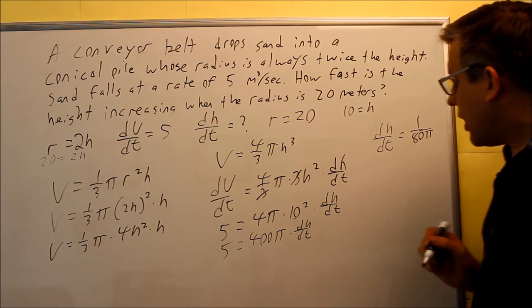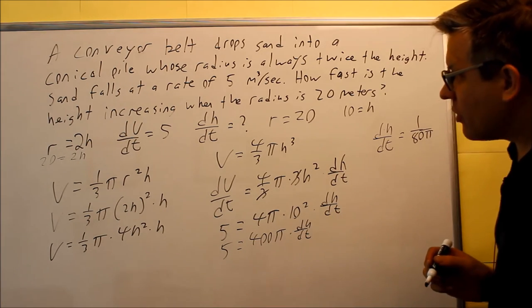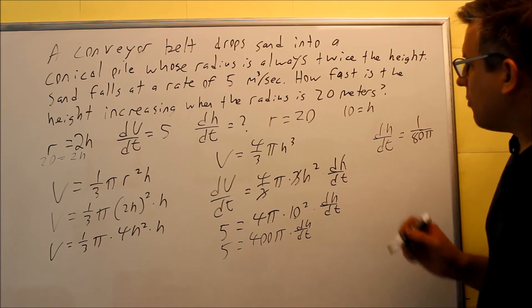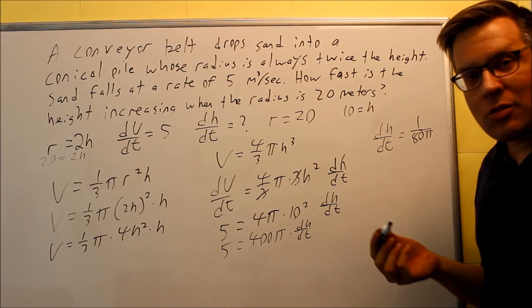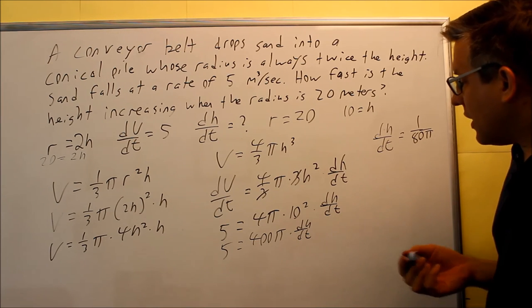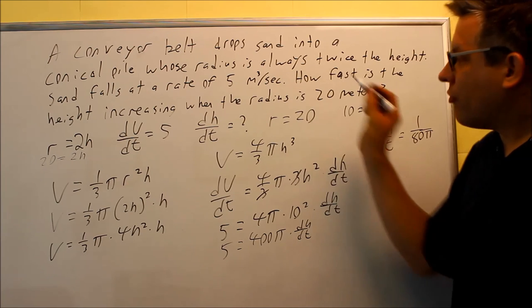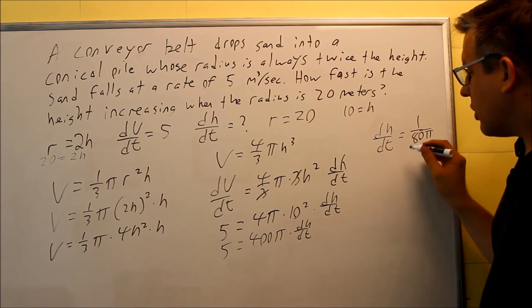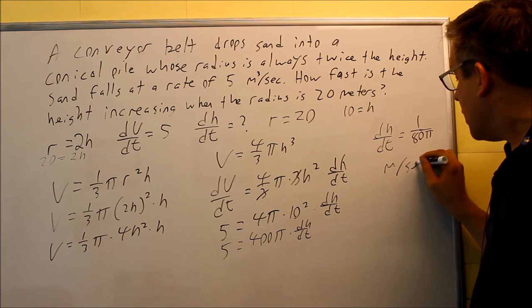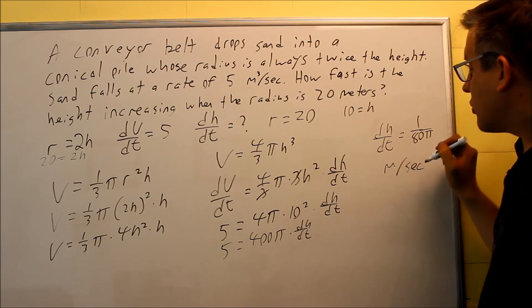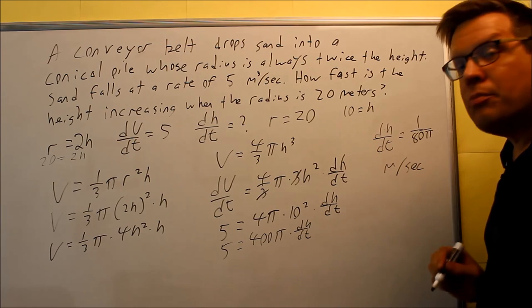And so you get 1 over 80 pi. Now what kind of units are we going to have on this one? Well, these dimensions, the radius is in terms of meters. That means your height's going to be in terms of meters as well. The time is going to be the same unit of time that we had before, seconds. So the units that we'll have on this are going to be in terms of meters per second. So the answer is 1 over 80 pi, meters per second.